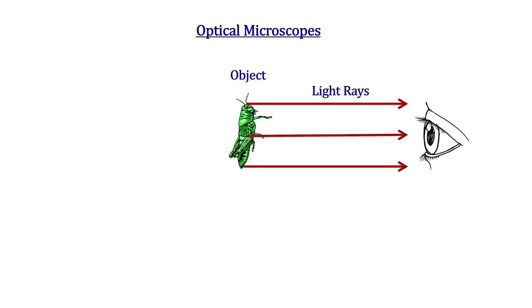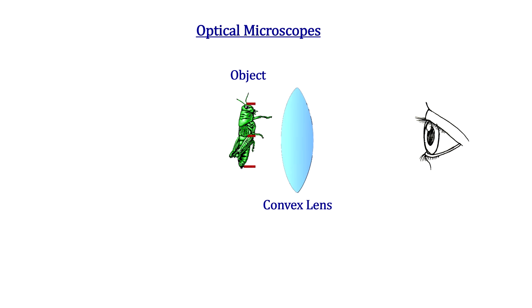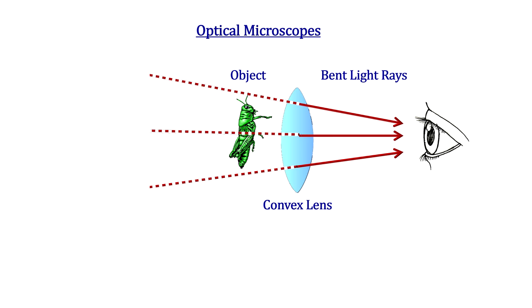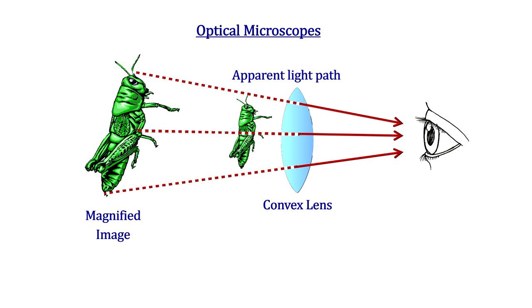Magnifying tools use lens combinations to bend light at an angle to increase the size of the image that's sent to the eye. The light traces the light rays back to a virtual image larger than the actual object. The more we bend the light, the larger the image appears.